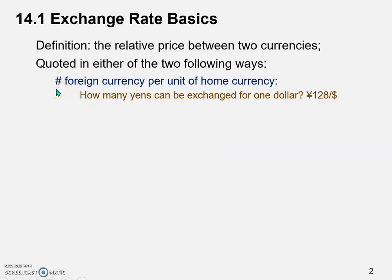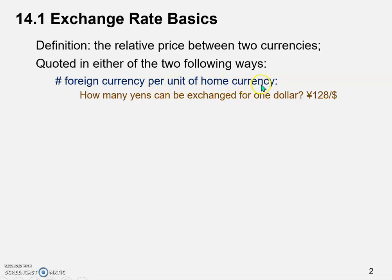The first way is the number of units of the foreign currency per unit of home currency. Here in this chapter, we're going to say that the U.S. dollar is the home currency, and we're going to talk about its rate against several other major currencies in the world. For example, how many Japanese yen can be exchanged for one dollar? As of now, the exchange rate between the yen and the U.S. dollar is 128 yen per dollar — that is, the number of foreign currency units (Japanese yen) per unit of home currency (U.S. dollar).